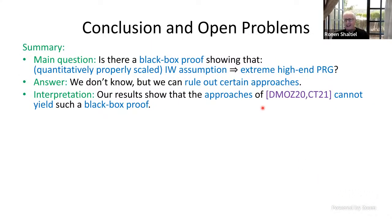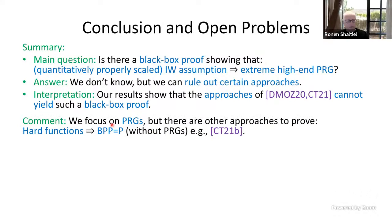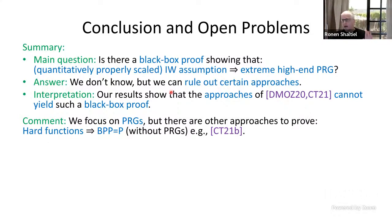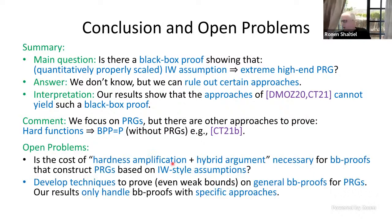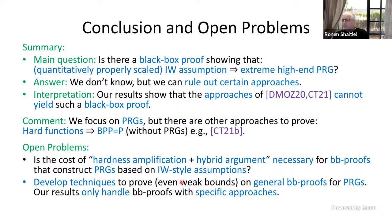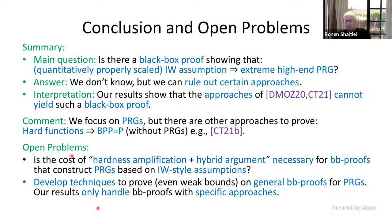In conclusion: we don't rule out additional approaches for proving BPP equals P based on hard functions, specifically a new paper by Chen and Tell from last year. Two open problems remain: first, do we really need to pay the cost of hardness amplification and hybrid argument in black-box proofs for constructing PRGs? Second, if not, we need techniques to prove even weak bounds on general black-box proofs — our results only handle black-box proofs with specific approaches like PEG plus extractor or PRG composition.